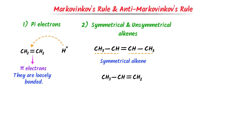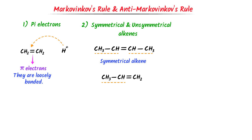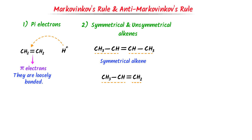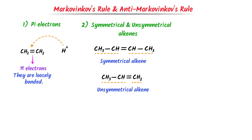On the other hand, in this alkene, at the left-hand side there are CH and CH3, while at the right-hand side there is only CH2. Hence, this is an unsymmetrical alkene.